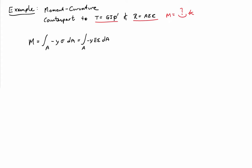I also know from our kinematic assumption what epsilon is. The kinematic assumption tells me that epsilon is equal to minus y kappa. So if I plug that in, I'll get y squared e kappa. The minus signs drop out, integrate it over the area.